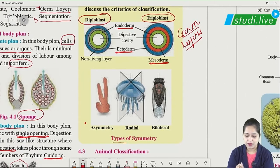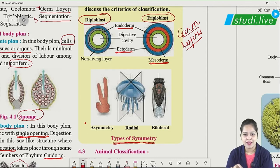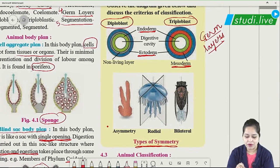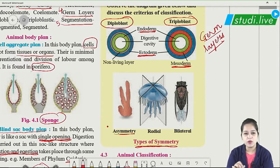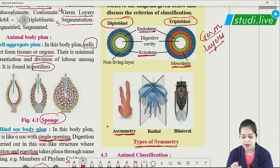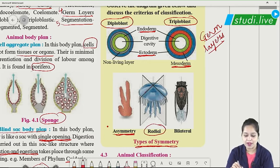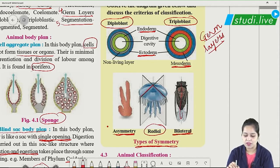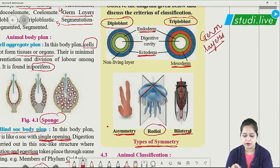Next is body symmetry. Three types of body symmetry are described. First is asymmetry — the body cannot be divided into equal parts in any plane. Second is radial symmetry — the body can be cut along the radius into equal parts. Third is bilateral symmetry — cutting down the middle divides it into equal parts.